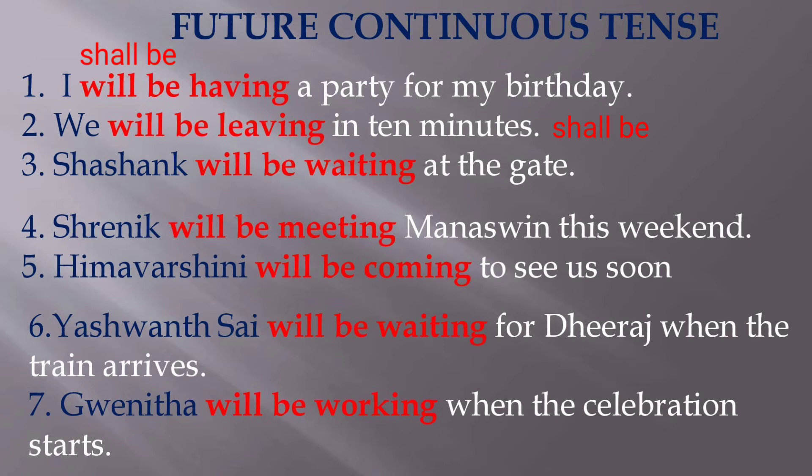If we observe these verb phrases — will be having, will be leaving, will be waiting, will be meeting, will be coming, will be working — the structure is: subject plus will or shall, plus be, plus V1 in the '-ing' form. These are examples of the future continuous tense with the correct structure.